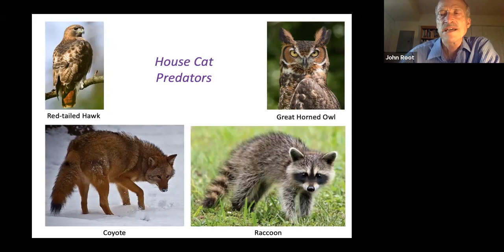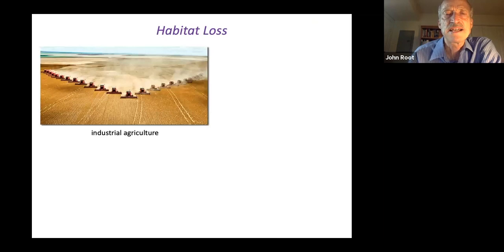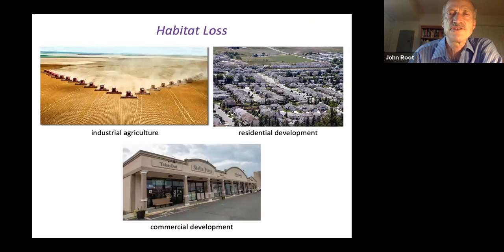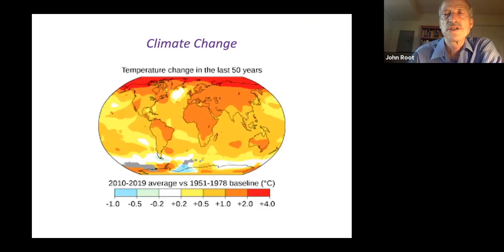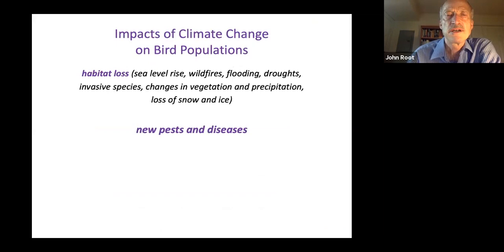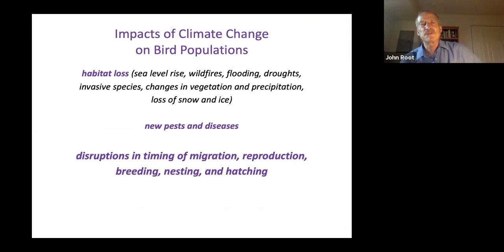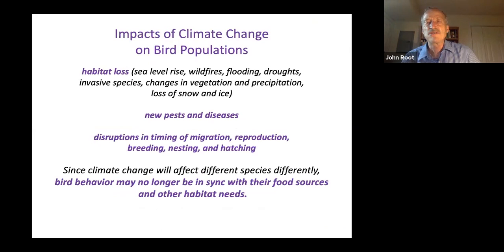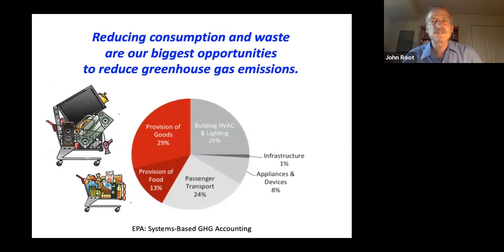Habitat loss from agriculture, residential development, and commercial development is a huge impact on all wildlife — there simply are not enough places for wildlife to live out their lives. Climate change has also had a major impact on bird populations, including habitat loss from a variety of causes, new pests and diseases, disruptions in timing of migration, reproduction, breeding, nesting, and hatching. Bird behavior may no longer be in sync with their food sources and other habitat needs.